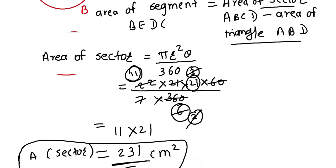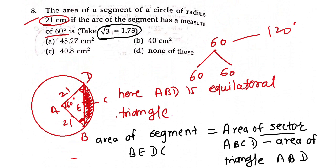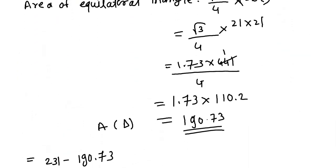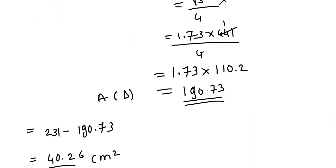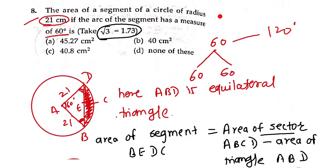Answer 40.26 cm² — options के पास पास है, 40.something। Option number C आएगा।